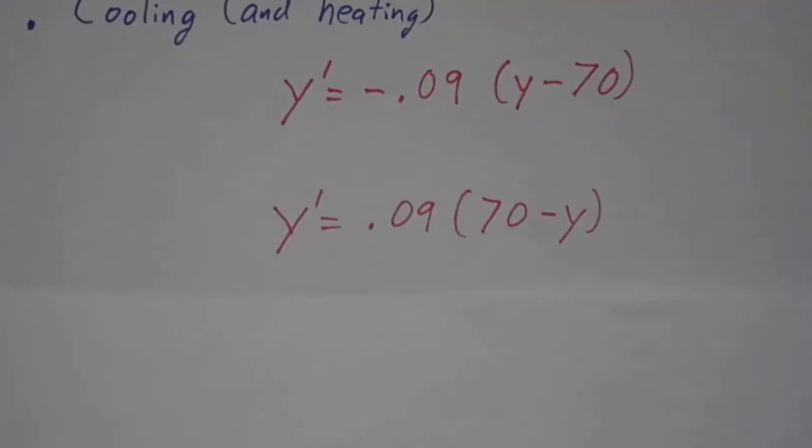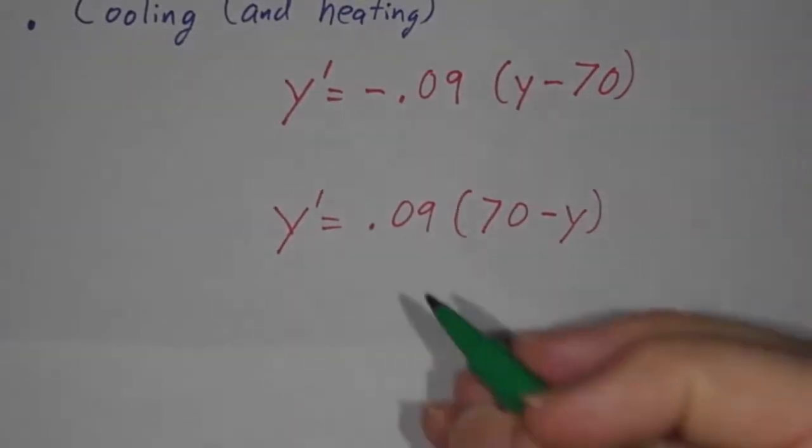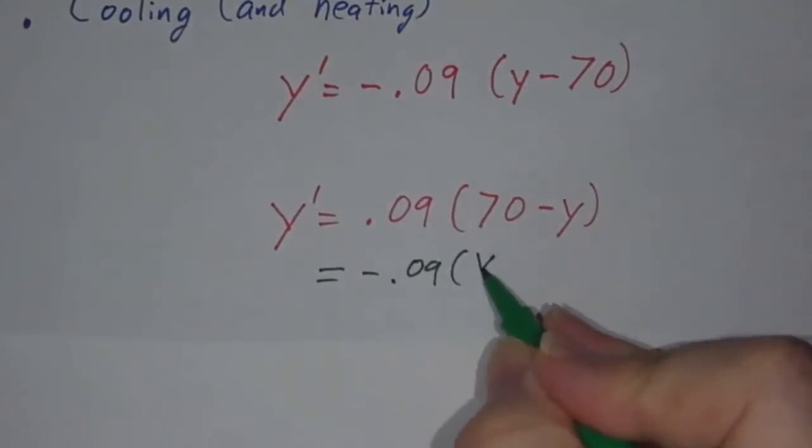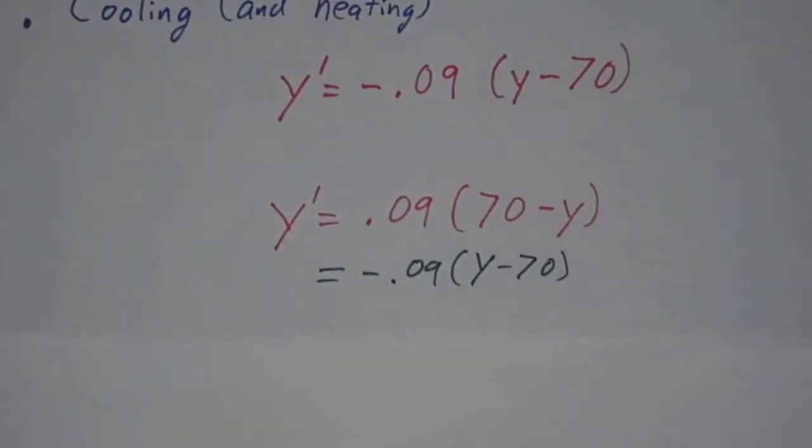Or maybe you took a cold drink out of the fridge and it's warming up. The rate at which it's warming up is proportional to the difference between room temperature and the temperature of your cold drink. This is the same thing as -0.09 times (y - 70). So it's literally the same equation as the turkey. It's just here you have y less than 70 and it's heating up, and with the turkey you have y bigger than 70 and it's cooling down.